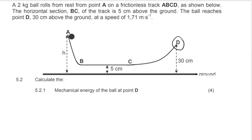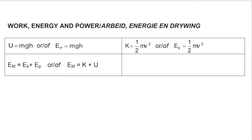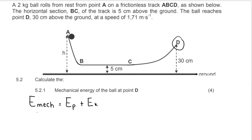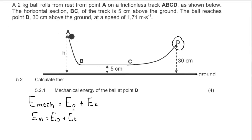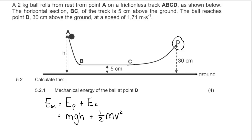Mechanical energy is the sum of potential energy and kinetic energy. We write: E_M = E_P + E_K. You must always write your formulas as given on the formula sheet. Some schools use K instead of E_K and U instead of E_P. I'll expand the formula: instead of E_P I write mgh, and instead of E_K I write ½mv². I've basically just expanded each part.